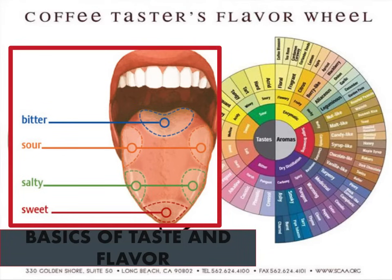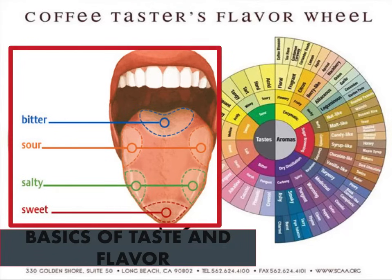Much research has been done about where and how we taste and how we perceive sensations on our tongue. While not isolated to any one region, this is a traditional diagram used to help identify some of the more general regions where you sense bitter, sour, salty, and sweet. Our entire tongue can sense any of these sensations, but these four general regions are typically more sensitive. Starting at the front, there is a stronger sense of sweet sensation; moving back along the sides, more sensitivity to salty; a little further back, sensitivity to sour; and furthest back, sensitivity to bitterness.